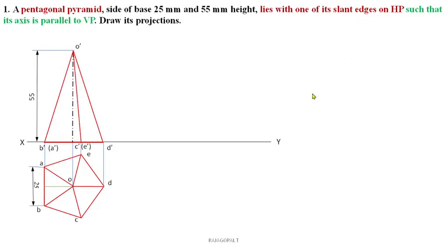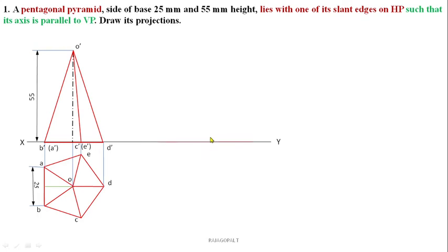Now, one of its slant edges must be on HP. If the slant edge is on HP, one corner should touch XY. We fixed corner D on XY. Corner D has OD as its slant edge. In the front view, O'D' is the slant edge that has to lie on HP, touching exactly on the XY reference line. Measure the distance of O'D' — do not use 55mm for completing O'D'. Always measure using the scale the O'D' slant edge length, fix a point on XY, and complete the O'D' slant edge.